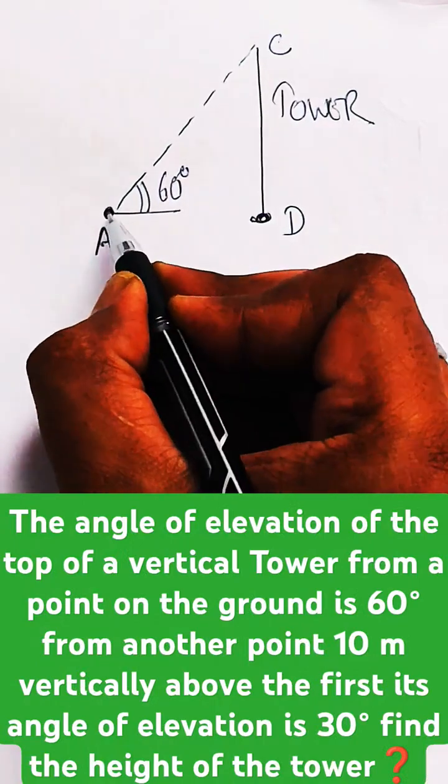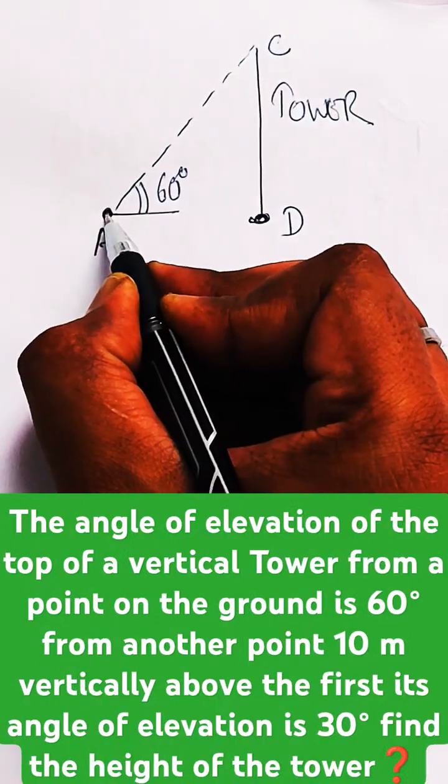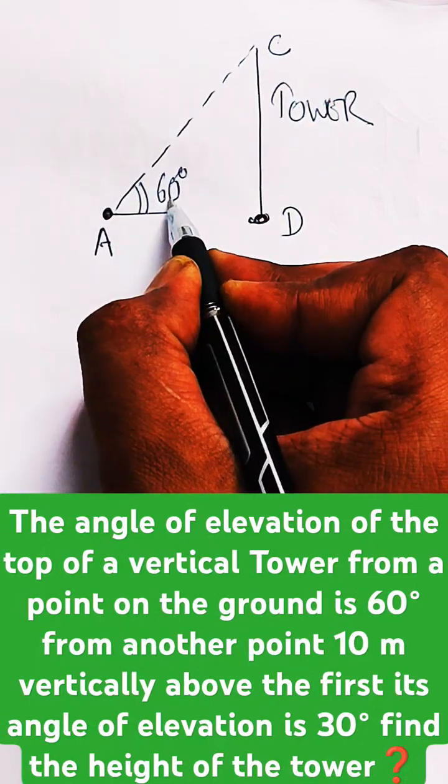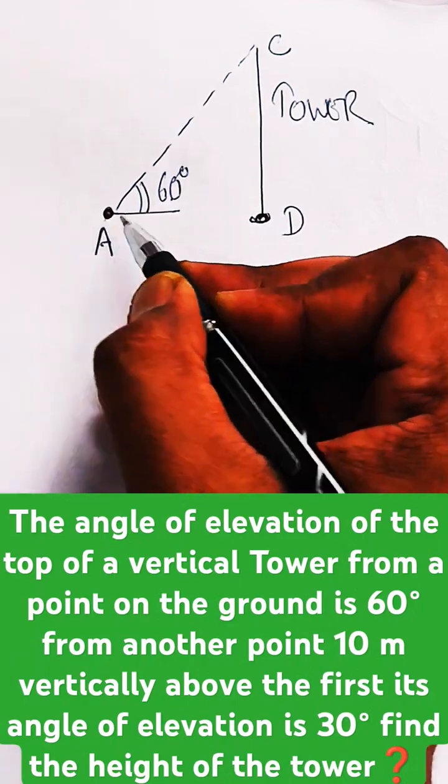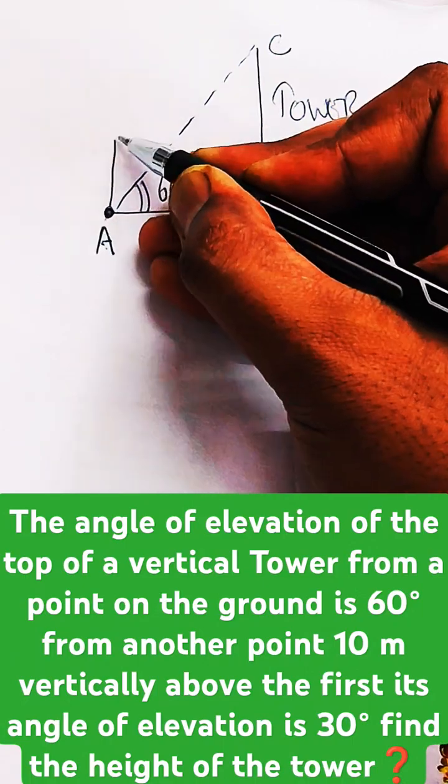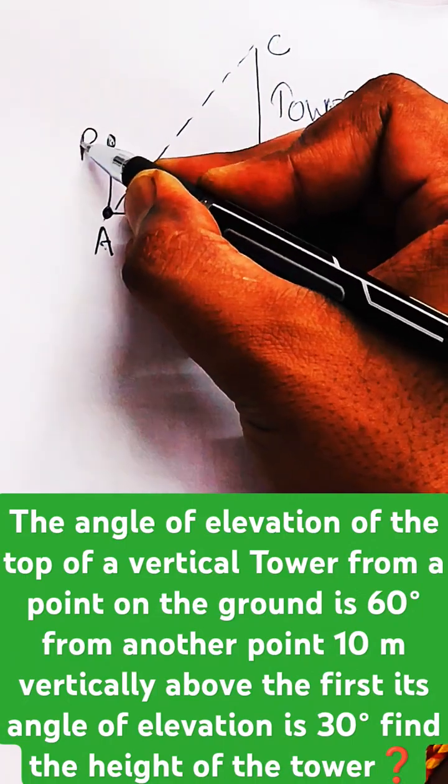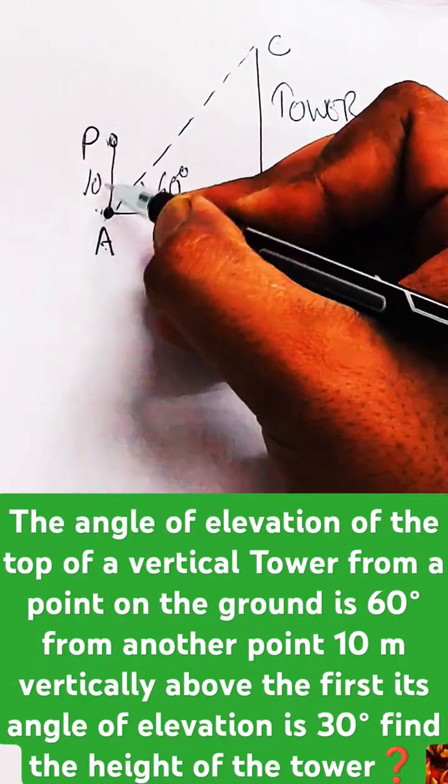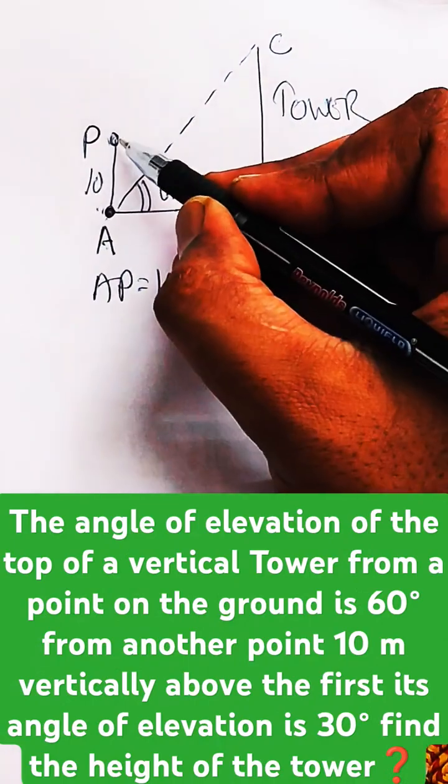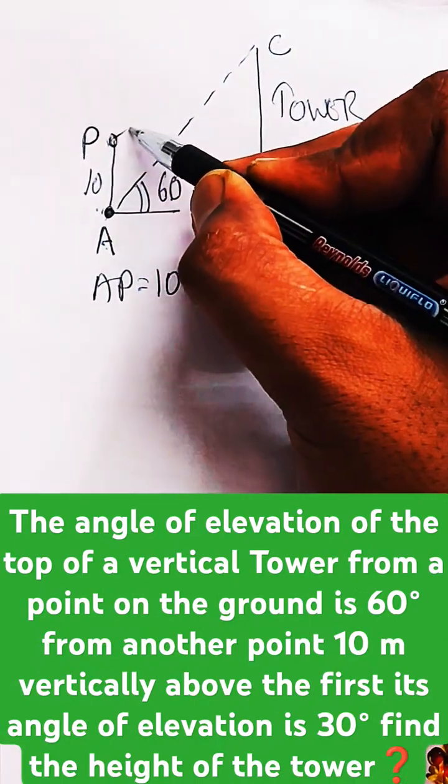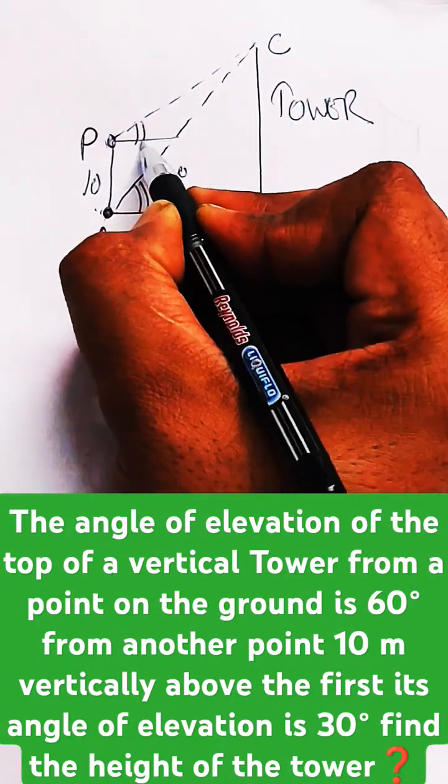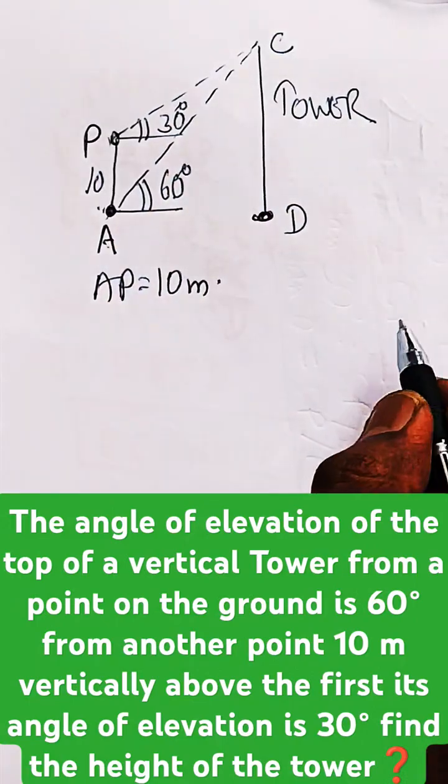From the same point where you measured the angle of elevation, then at another point 10 meters vertically above the first—if this is the first point, then 10 meters vertically above, let's say this is the second point P—and the distance between AP is 10. From the second point, the angle of elevation for the same top of the tower is given to you as 30 degrees. We need to find the height of the tower.